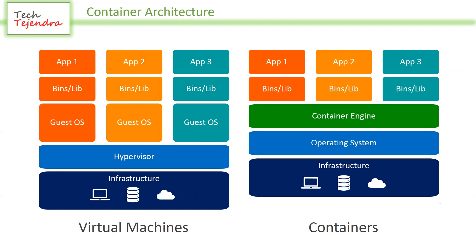In a container setup: infrastructure is at the bottom, your operating system runs on top of it, and then your container engine runs on top of that. The container engine might be Docker or Podman. On top of the container engine you create your containers. A container holds your dependencies — the binary and library files of your application — and on top of that, the application code. Once the container is ready, it becomes a portable container that we can move to any machine where a container engine is running.